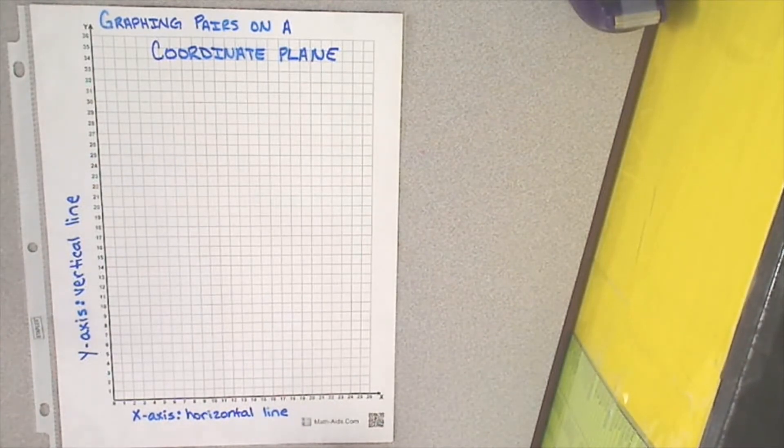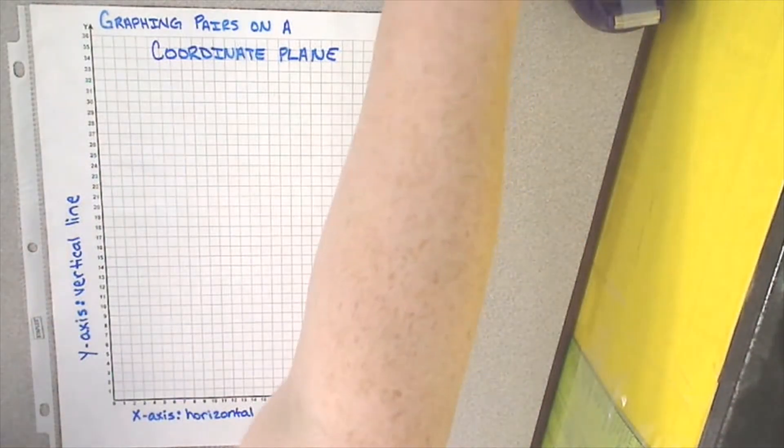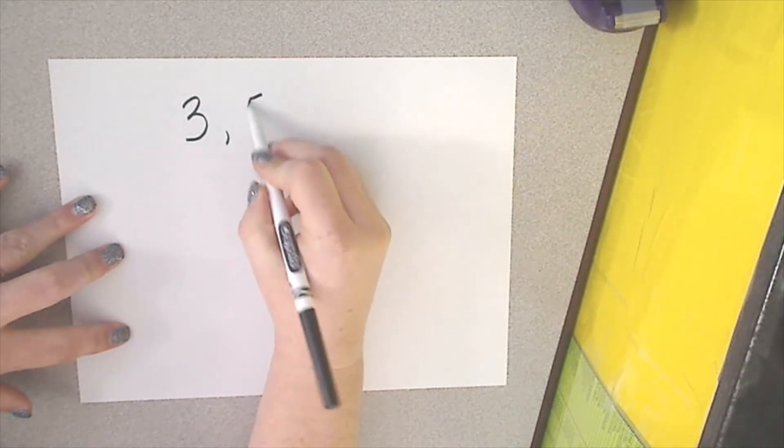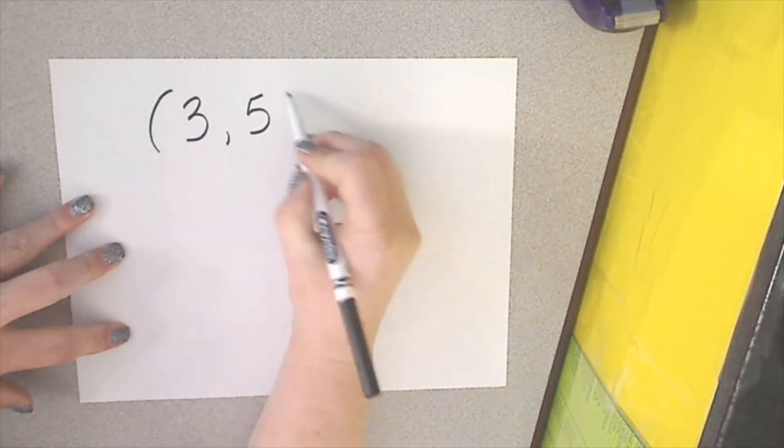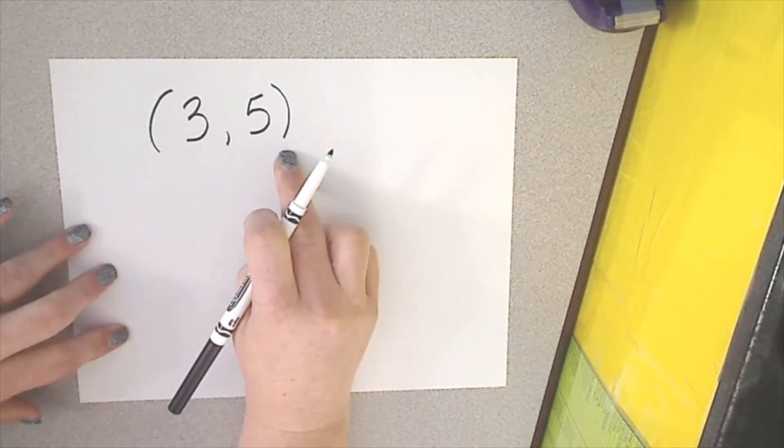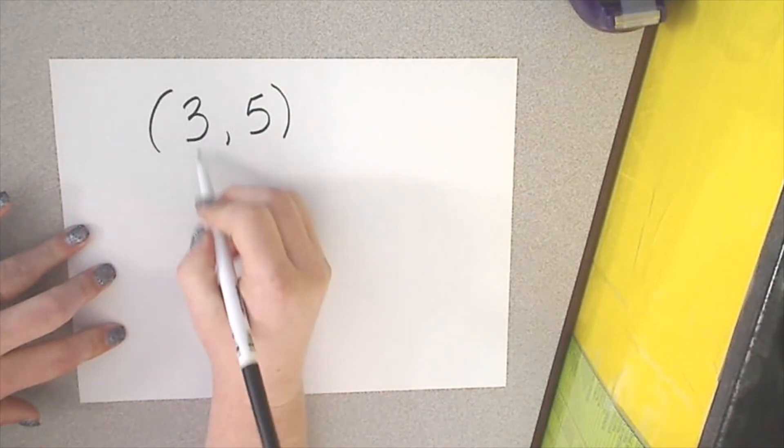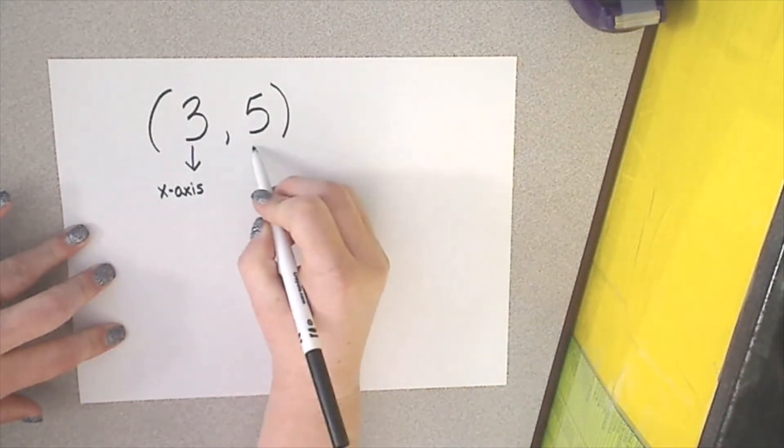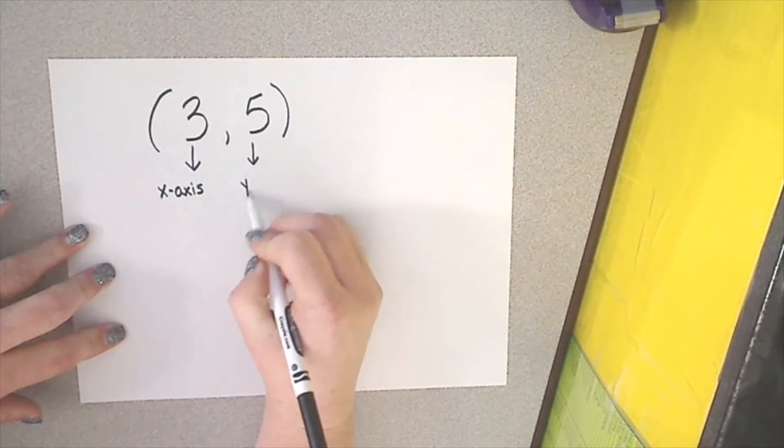So, now let's talk about a pair of numbers that you would graph on a coordinate plane. I'm going to set my graph aside for just a second. In a set of ordered numbers, for example, 3 comma 5. This is a set of ordered numbers. The 3 is going to be what we find on our x-axis. The 5 is going to be related to our y-axis.